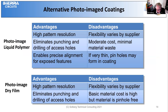Photo image polymers have pluses and minuses as well. They offer high pattern resolution but flexibility varies by supplier. On the plus side, they eliminate punching and drilling of access holes and the cost is moderate with minimum material waste. They enable precise alignment for exposed features like land patterns, but they are very thin and pinholes may occur occasionally. Pinholes over a copper conductor will need some type of touch-up.